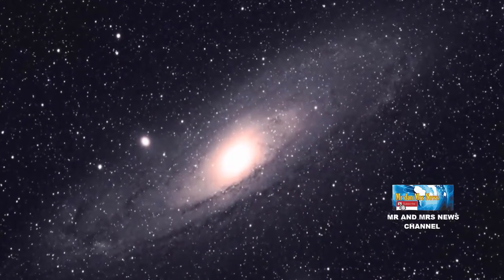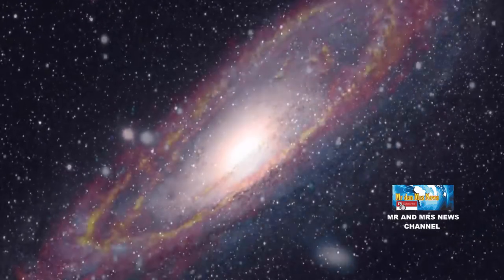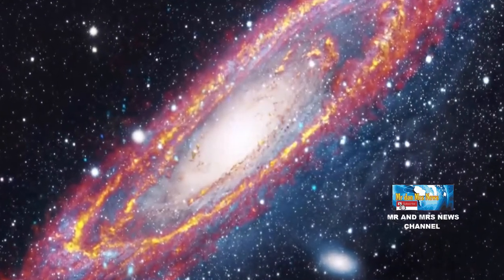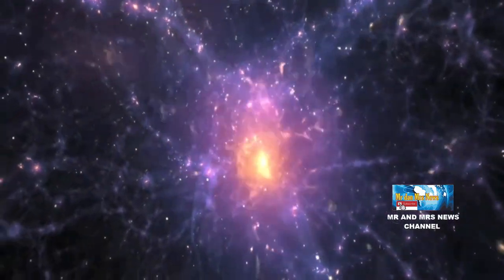Galaksi Andromeda memiliki bentuk spiral. Diameter galaksi ini adalah 220 ribu tahun cahaya. Galaksi Andromeda berjarak 2,54 tahun cahaya dari bumi.